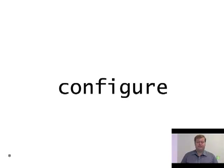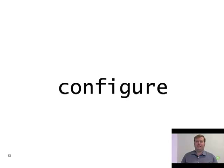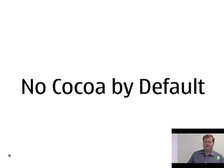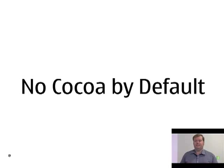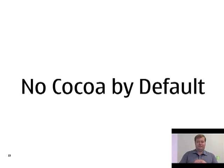We know that Cocoa is a new way of using Qt, and there are a lot of people who have already written their program on Mac to use Carbon and don't necessarily want surprises when they first build Qt 4.5. So we aren't going to put Cocoa on by default — it's something you'll have to opt in to. If you configure Qt the same way you configured Qt 4.4, you will get the same options and it will be running Carbon in 32-bit.